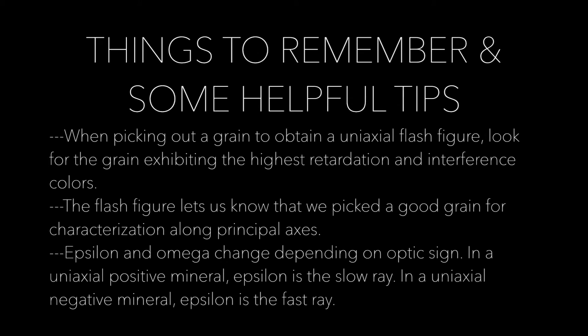Here are some things to remember and some helpful tips. When picking out a grain to obtain a uniaxial flash figure, look for the grain exhibiting the highest retardation and interference colors. The flash figure lets us know that we picked a good grain for characterization along principal axes. Epsilon and omega change depending on optic sign: in a uniaxial positive mineral, epsilon is the slow ray; in a uniaxial negative mineral, epsilon is the fast ray.